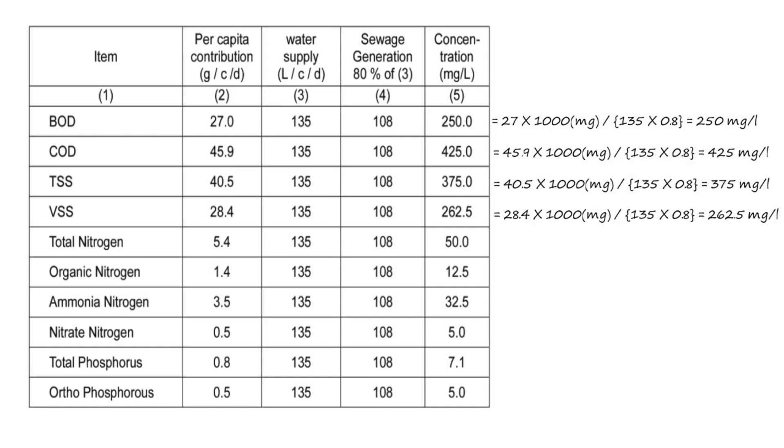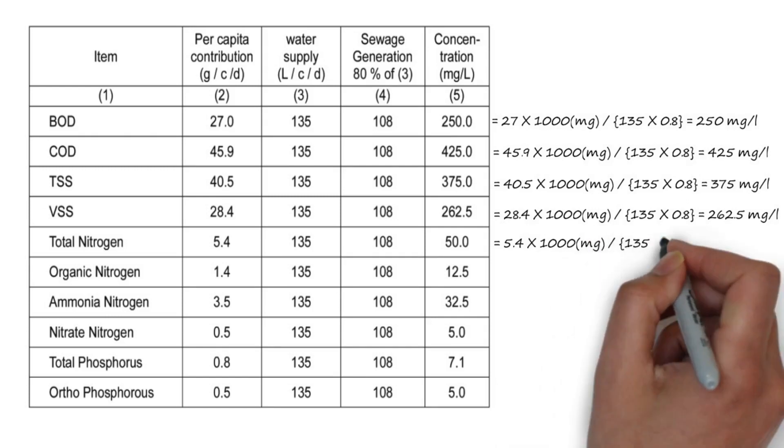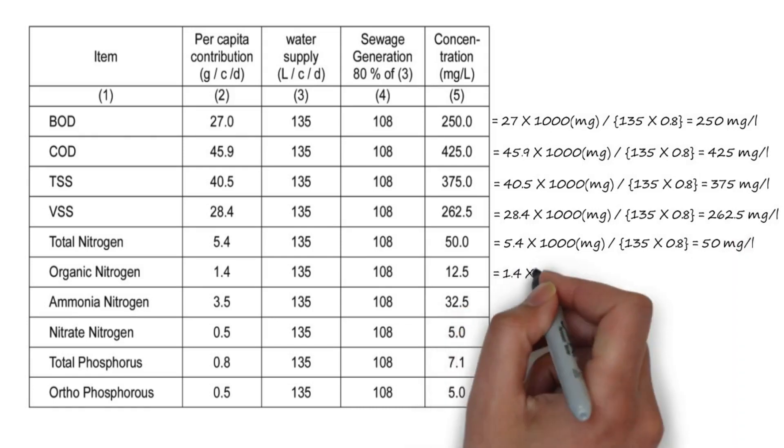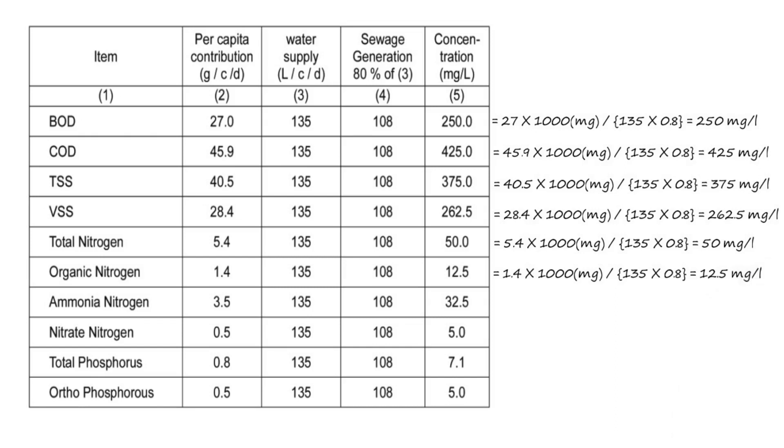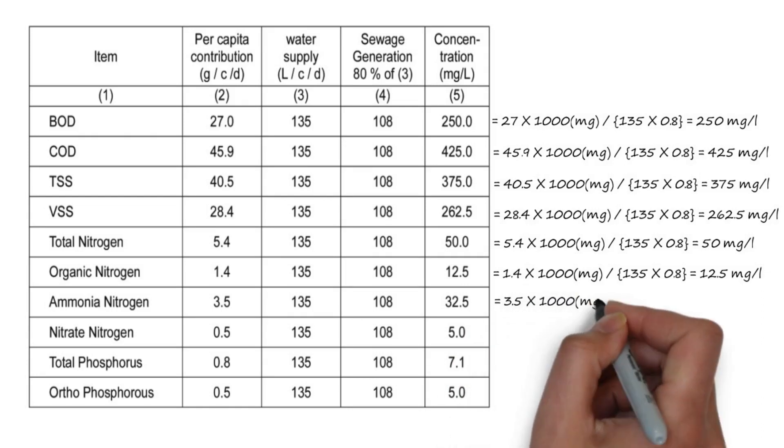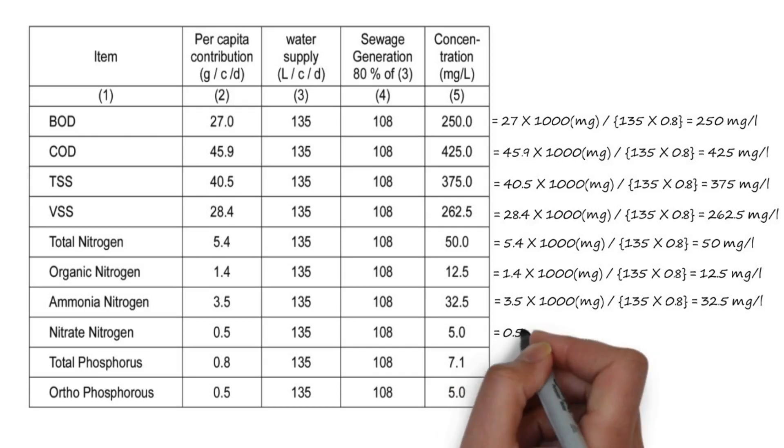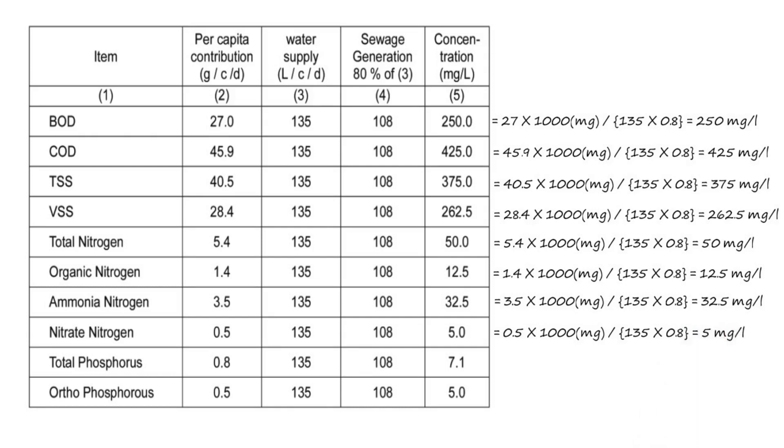For ammonia nitrogen, 3.5 multiplied by 1000 divided by 135 multiplied by 0.8, that is 32.5 mg per litre. For nitrate nitrogen, 0.5 multiplied by 1000 divided by 135 multiplied by 0.8, that is 5 mg per litre.